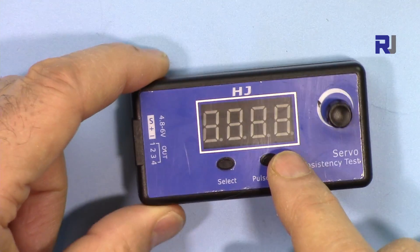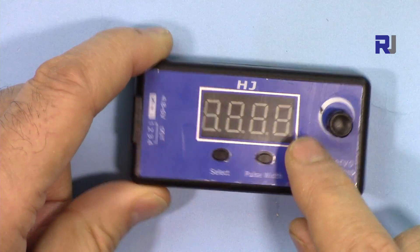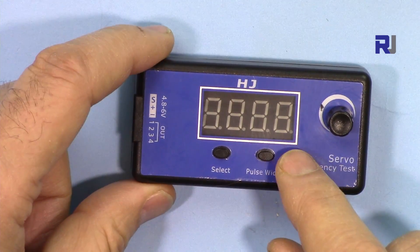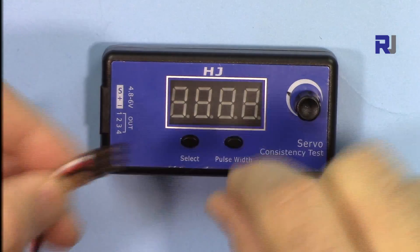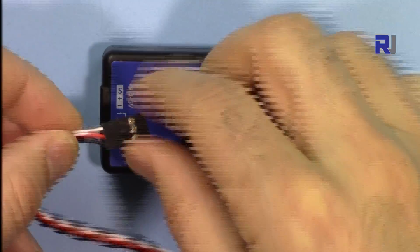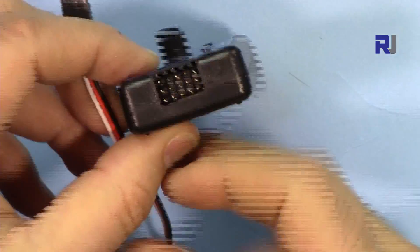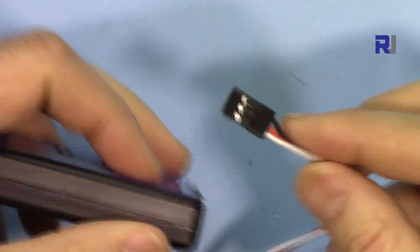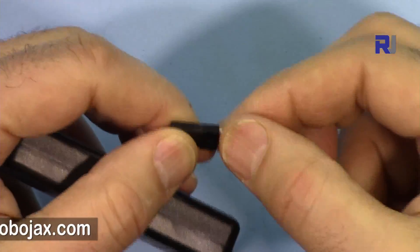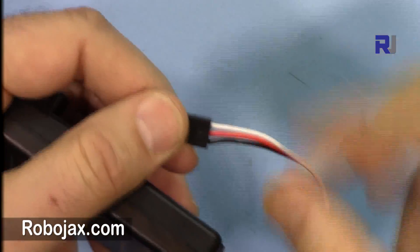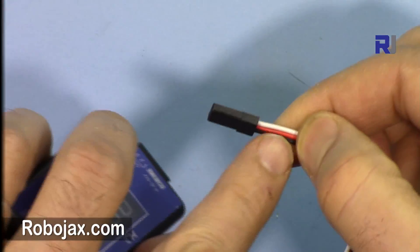For some steering servos, if you do not select the right one for digital servo, the servo might be damaged. Now I have the 5 volts here prepared. When you insert the cable here, make sure that the signal is at the top and the black is at the bottom.